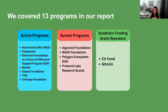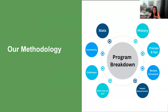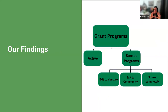We broke down each program by stats, community, transparency, how much community say was part of decision-making, the challenges they faced, what they did well, their history, process ops, review structure, and most importantly impact measurement. We were able to bucket programs into a few different categories: active programs, programs that sunsetted with an exit to venture where grants became investments, programs with an exit to community where decision-making shifted from centralized to community-run, and programs that completely shut down.